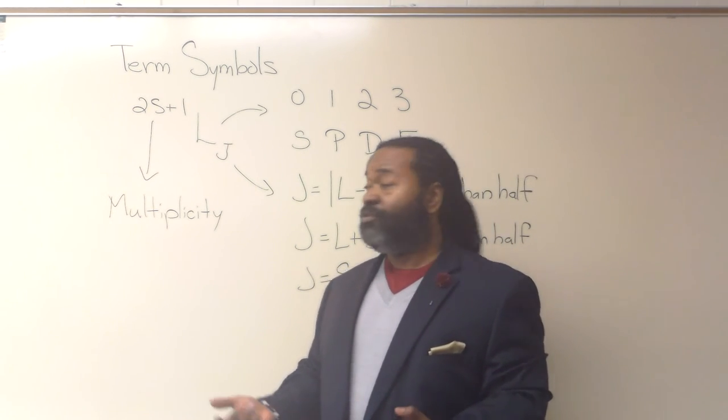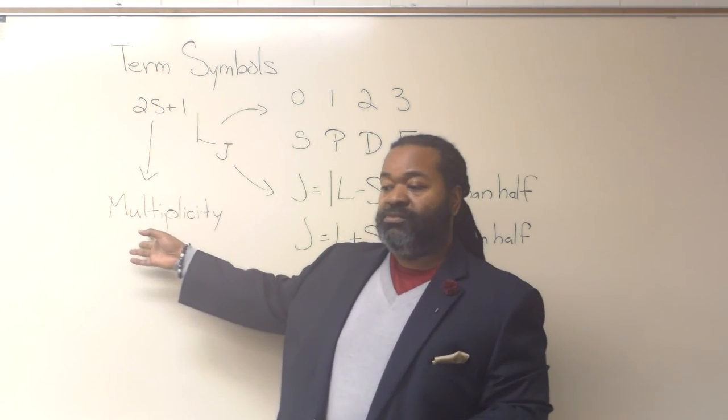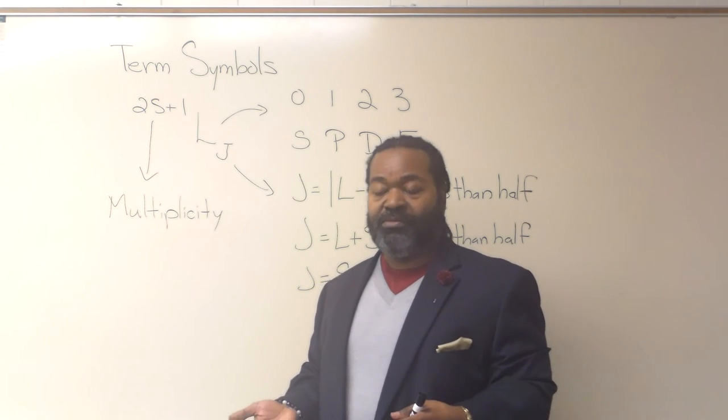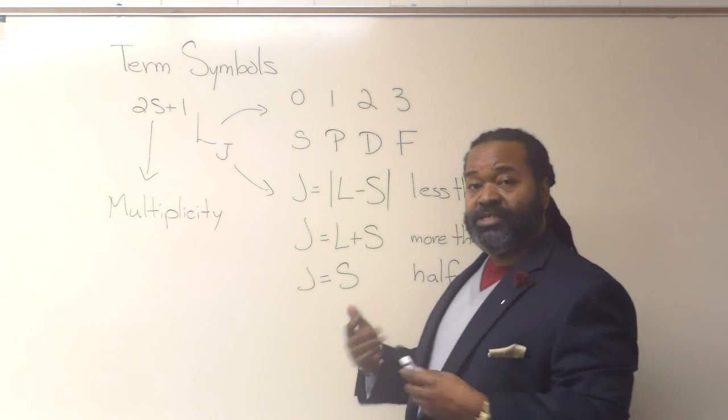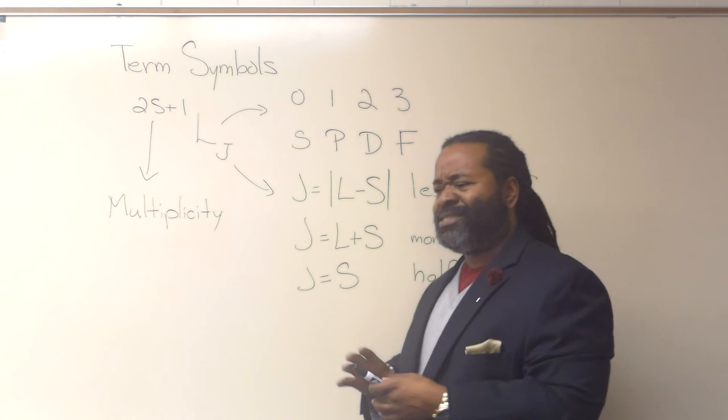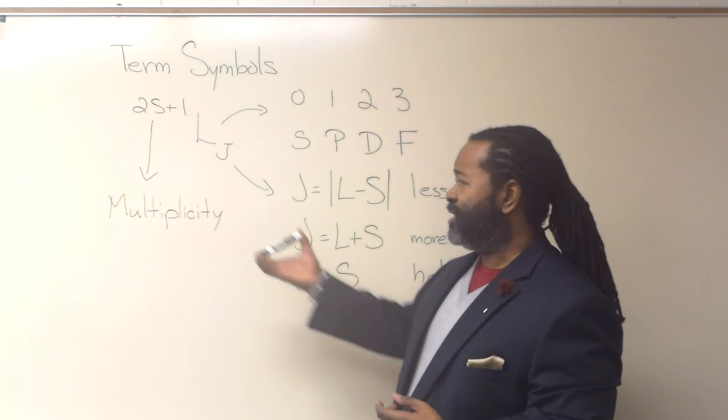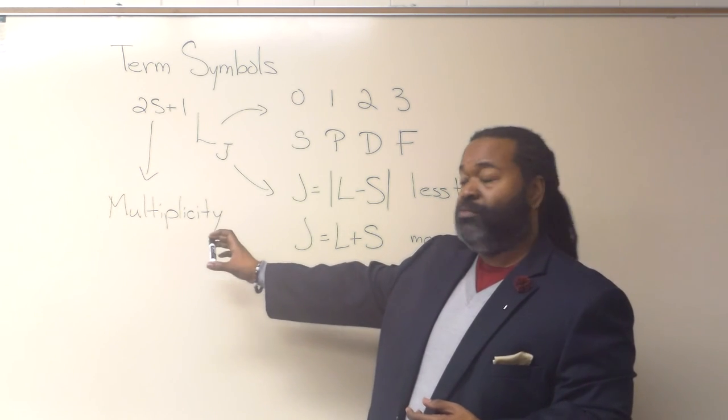So in order to find a value for s, for the multiplicity, we'll simply add up all of the spin quantum numbers. Paired electrons will actually end up canceling. We'll discuss that a bit as well. So you can actually just skip to counting up your unpaired electrons.